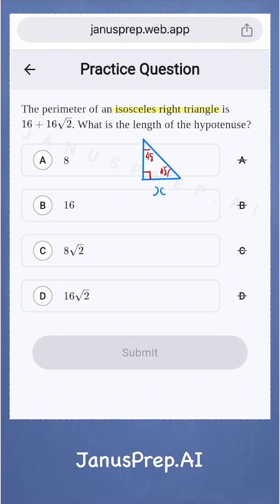The legs are equal to x. The hypotenuse is x times square root of 2.